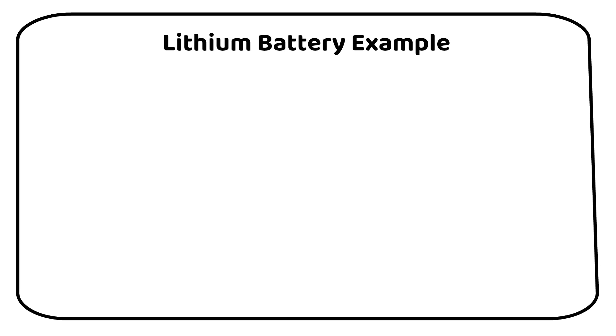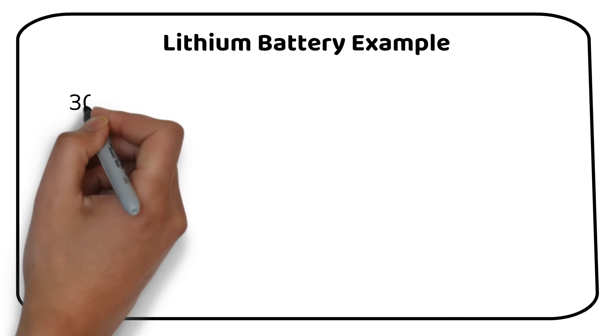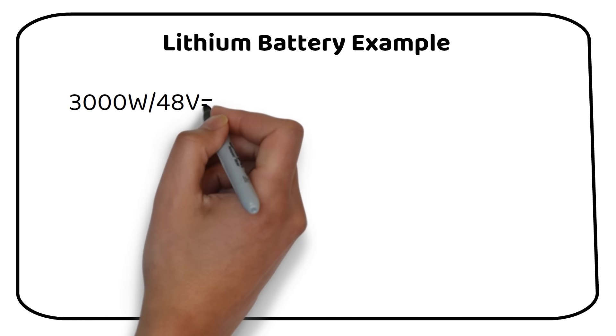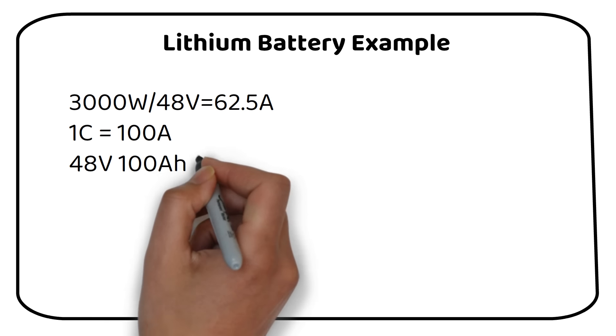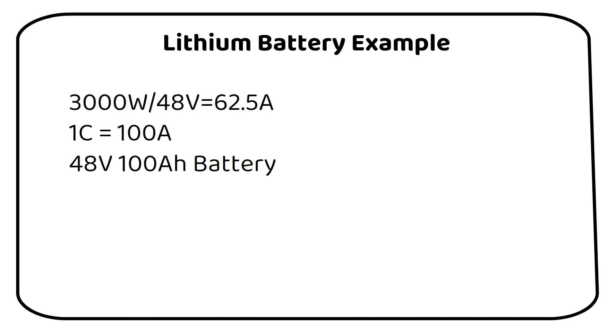Now back to the subject with an example for lithium batteries. We already know we need a 48 volt battery. Next we need to calculate the current it will draw. 3000 watts divided by 48 volt equals 62.5 amps. This is under the recommended discharge rate of a 100 amp hour battery, which is 100 amps. We need to use a 48 volt 62.5 amp hour lithium battery. A 48 volt 100 amp hour server rack is an ideal example of a battery that is suited for a 3kW inverter.